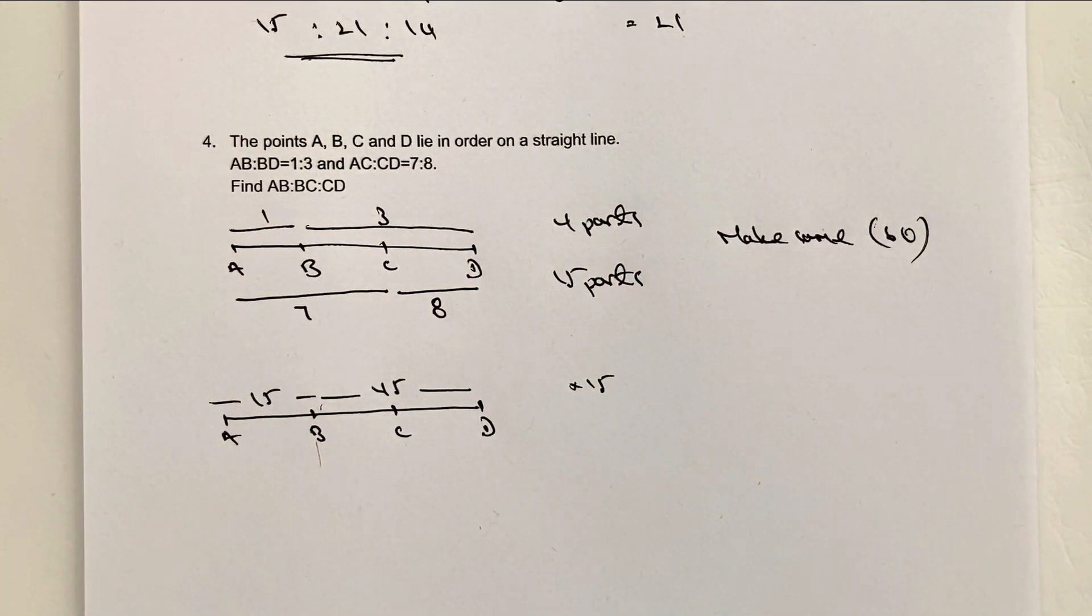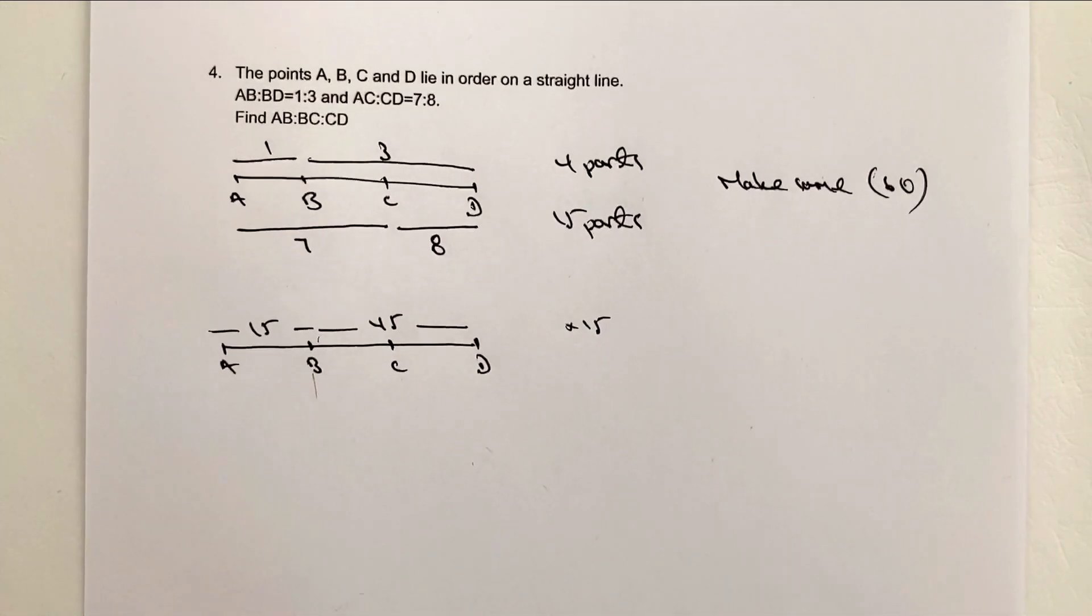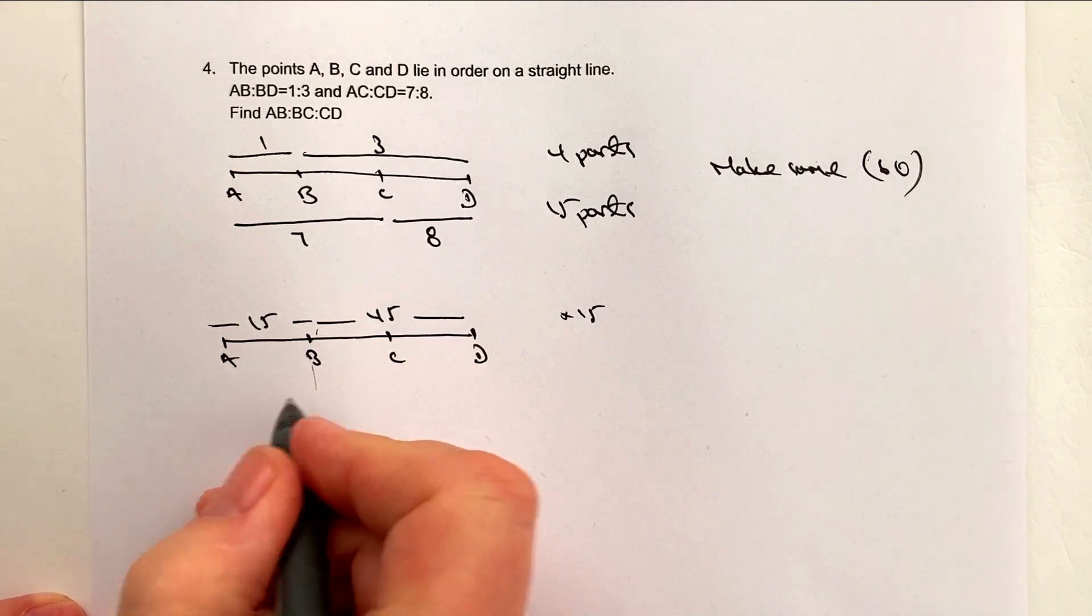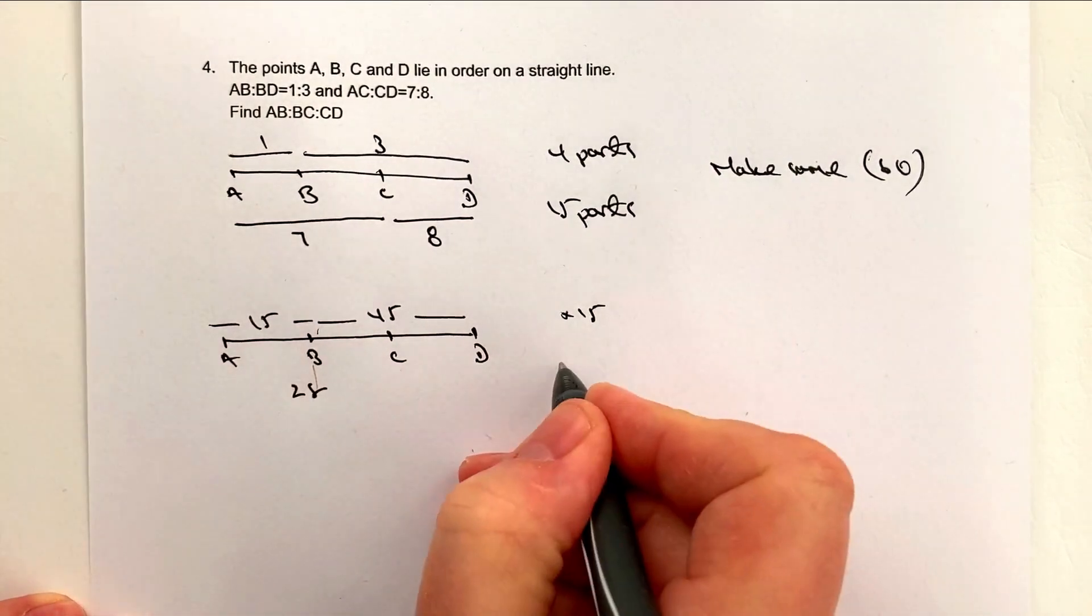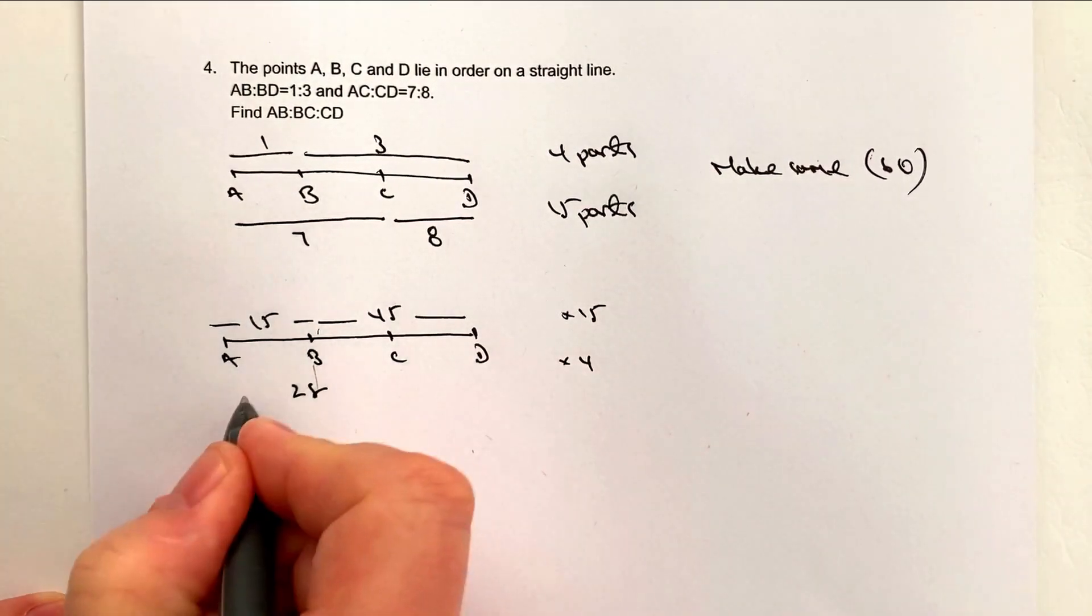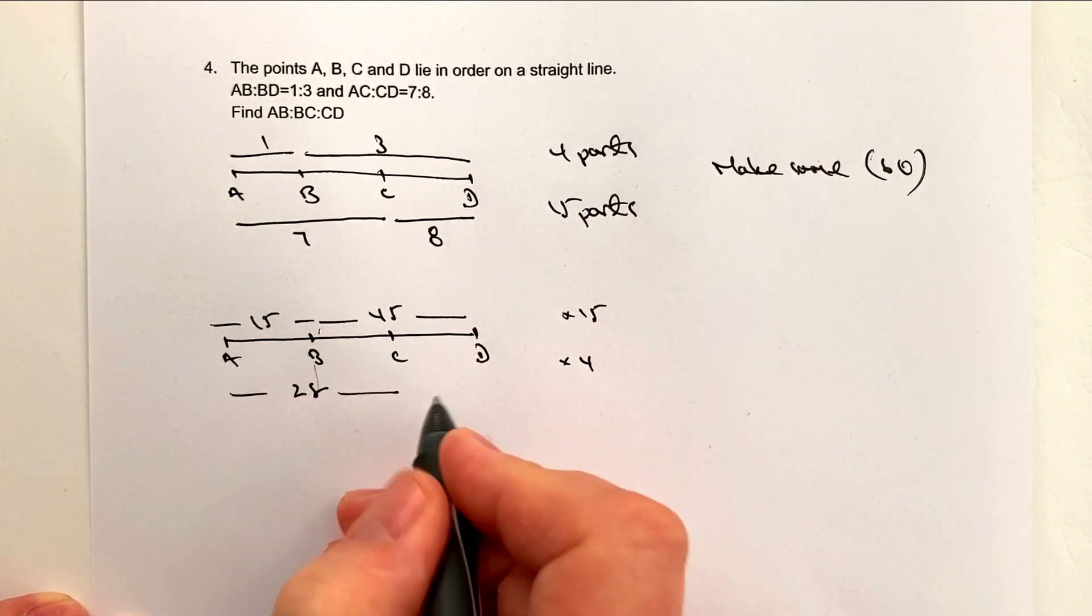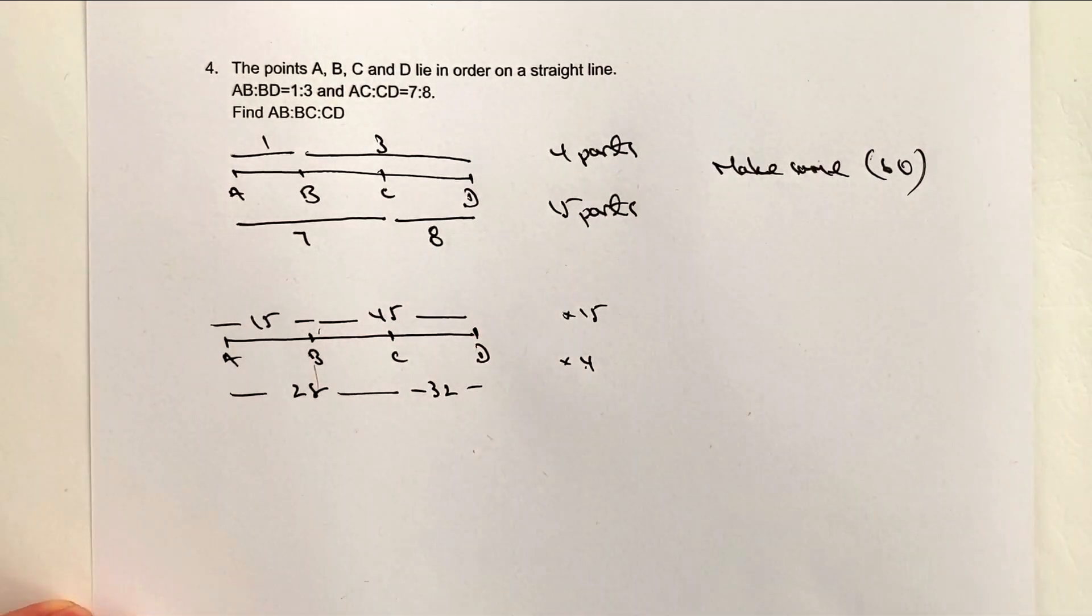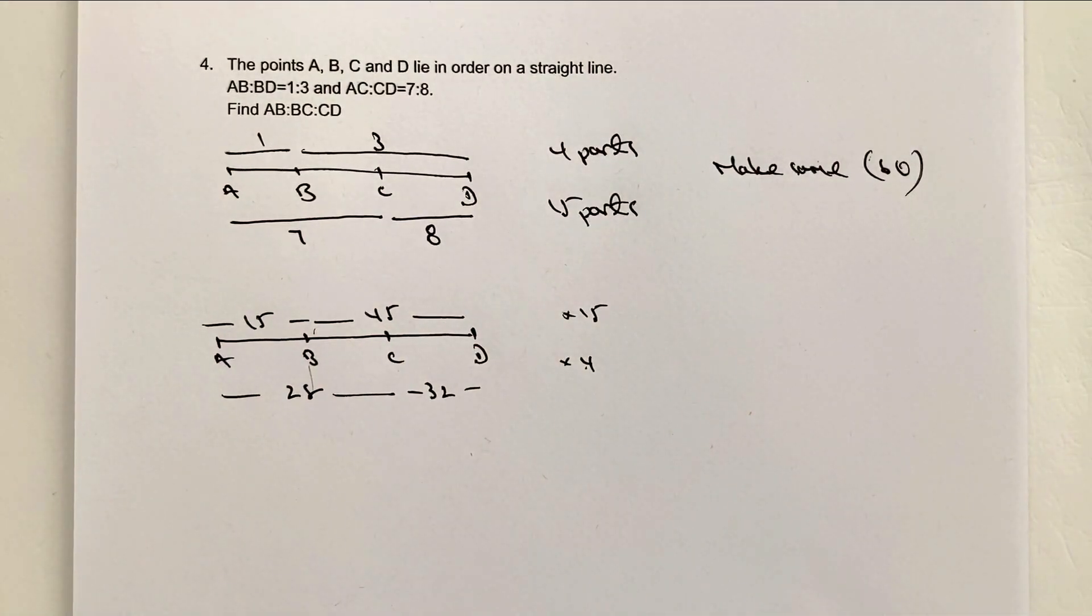What I'm going to do then is do exactly the same for the bottom. So this is going to be now 28 because I'm multiplying by 4, and this is going to be 32 because I'm also multiplying 8 by 4 will give me 32. So I'm now in a position where I can break this up into the AB to BC to CD ratio.